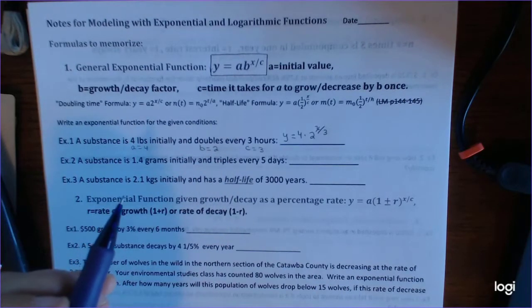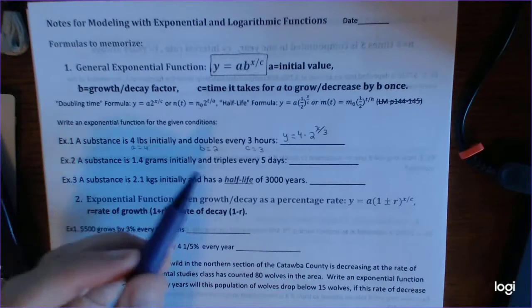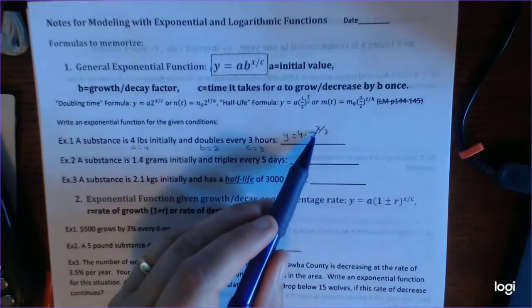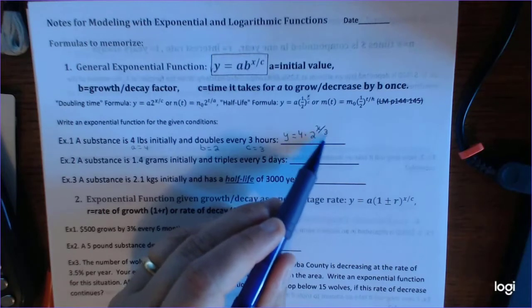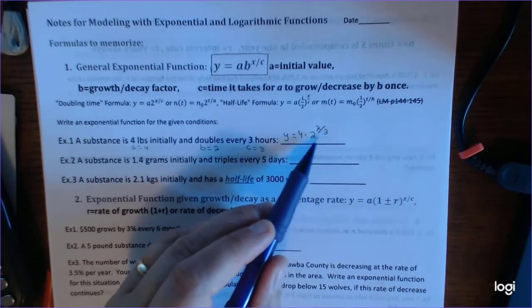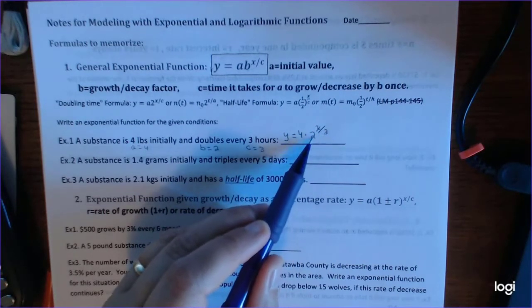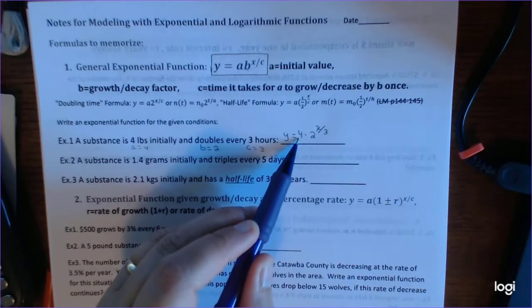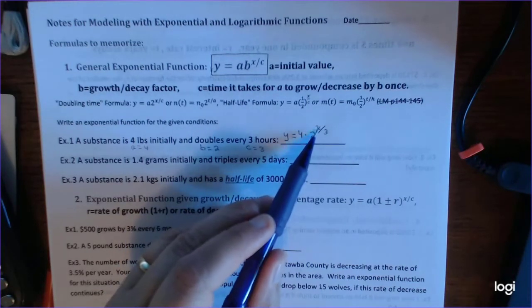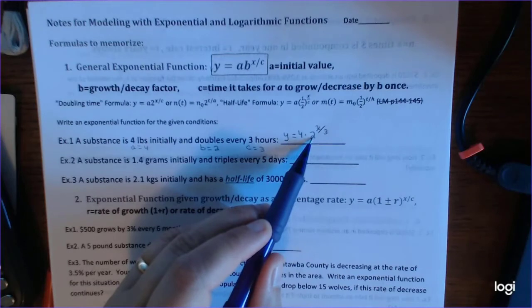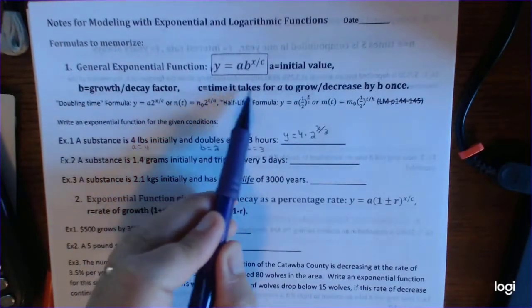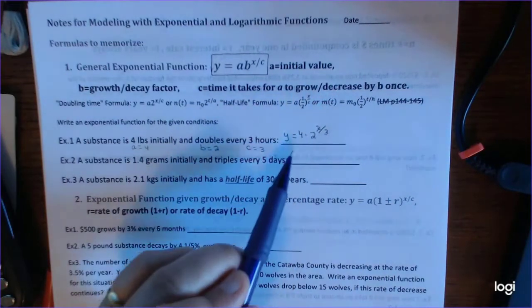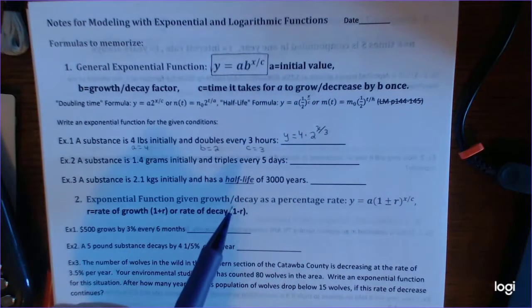Well, it doubles. So 4 times 2 is 8. How much will you have after 6 hours? Well, 8 times 2 is 16. So you can check it out. If you put 3 in for X here, 3 divided by 3 is 1, and so you get to use that 2 times 4. So if it were just 2 hours, you wouldn't get to use that 2 yet. So that's what we mean by C is the time it takes for A to grow or decrease by B one time.